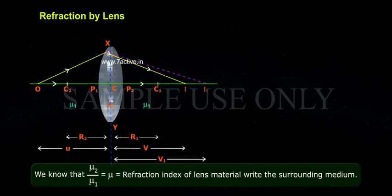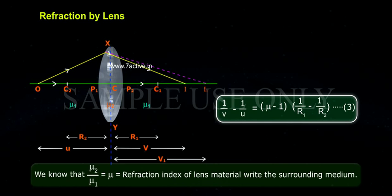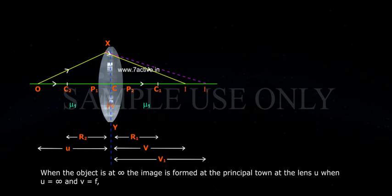We know that Mu2 by Mu1 equals to Mu, therefore 1 by V minus 1 by U equals to Mu minus 1 into 1 by R1 minus 1 by R2, equation 3. When the object is at infinity, the image is formed at the principal focus of the lens.